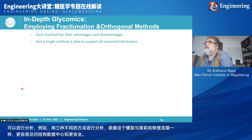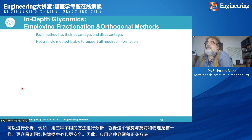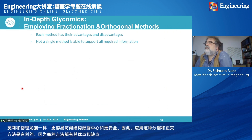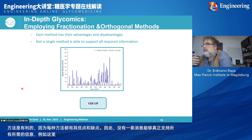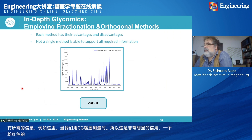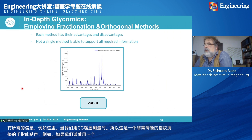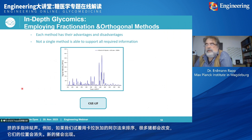Employing this fractionation with orthogonal methods is advantageous because each method has its own advantages and disadvantages — no single method is able to supply all required information. For example, when we measure a complex sample with CGE-LIF, we get a very crowded glyco-fingerprint. If we then try to sequence down with an alpha-galactosidase, many peaks change position, disappear, or new peaks appear — making it very hard to assign what happened with which structure during the sequencing.